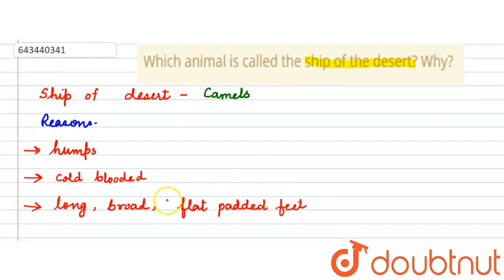So eventually these are the reasons why camel is called the ship of the desert. So this is all for this question, hope you have understood it well, thank you so much.